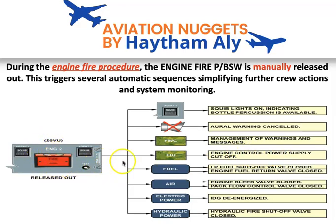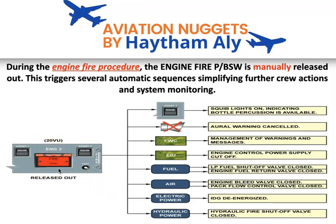Remember that releasing the fire push button — through the engine interface unit — will cut off FADEC and engine control power supply. Also, when you release the fire push button it will confirm the closure of the low pressure fuel valve in the wing, so fuel will be cut off.